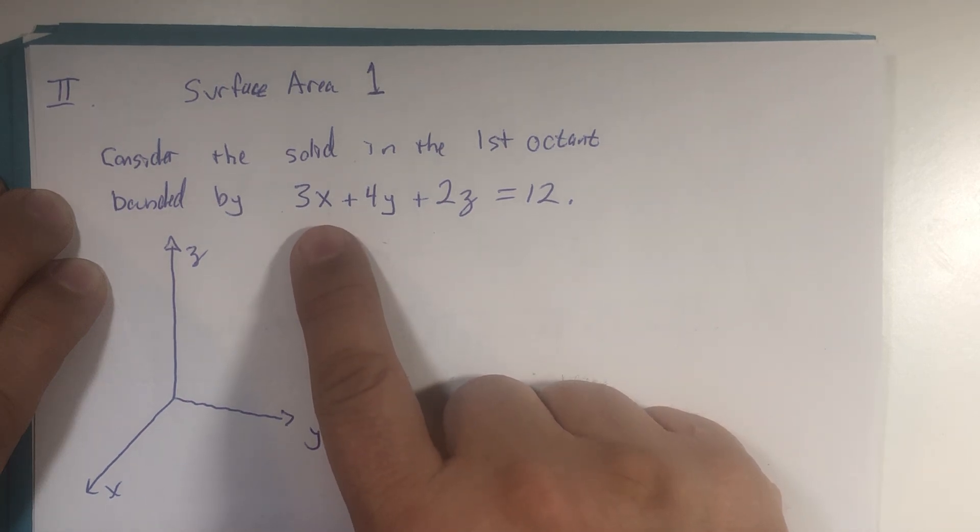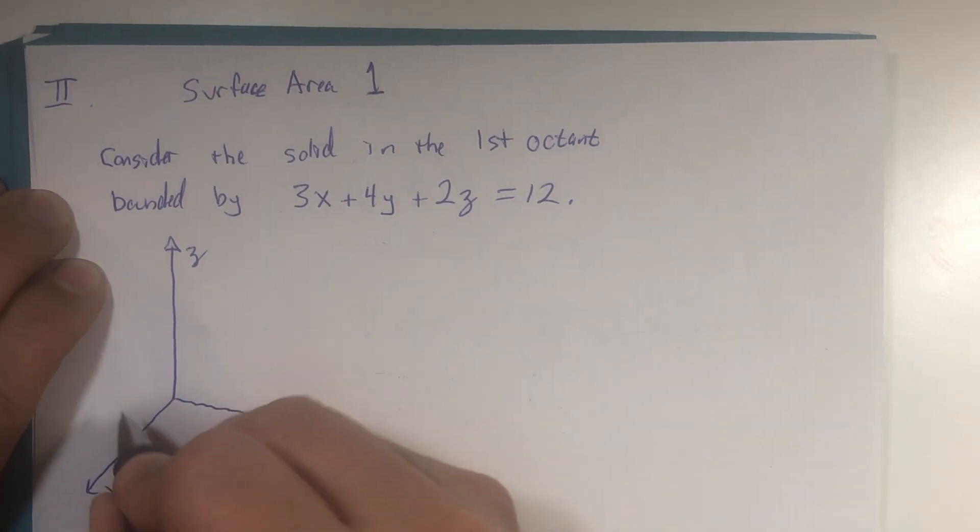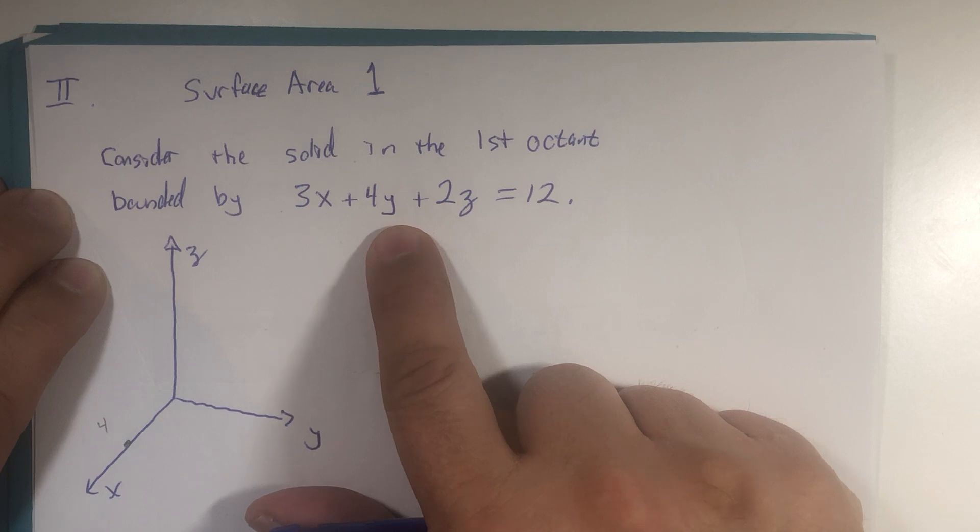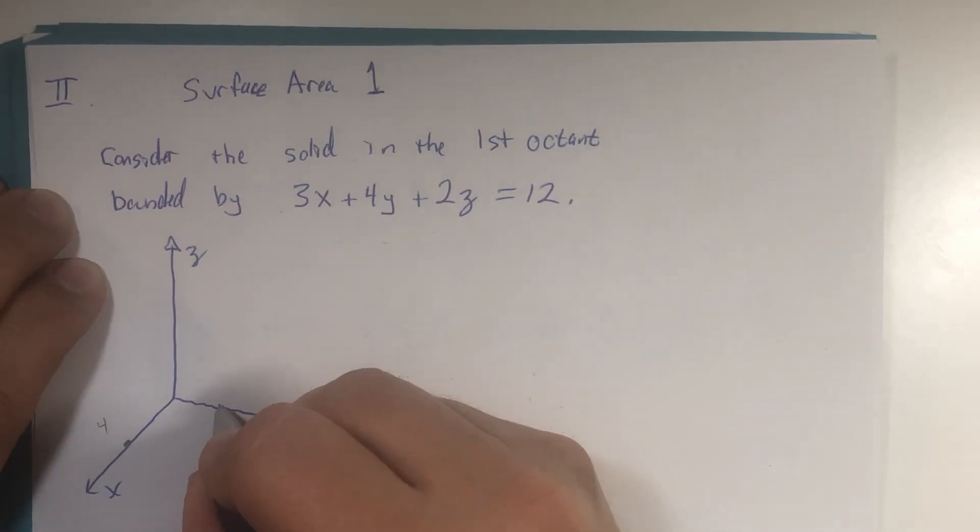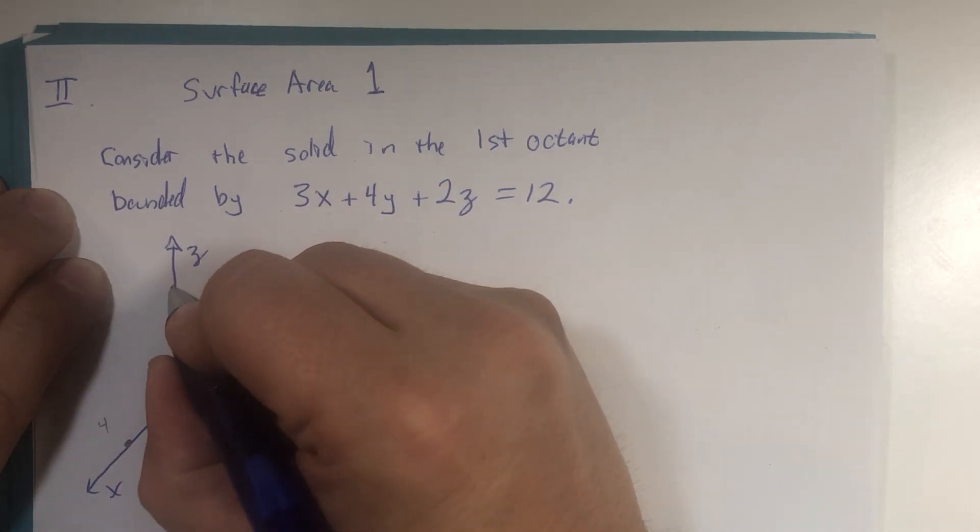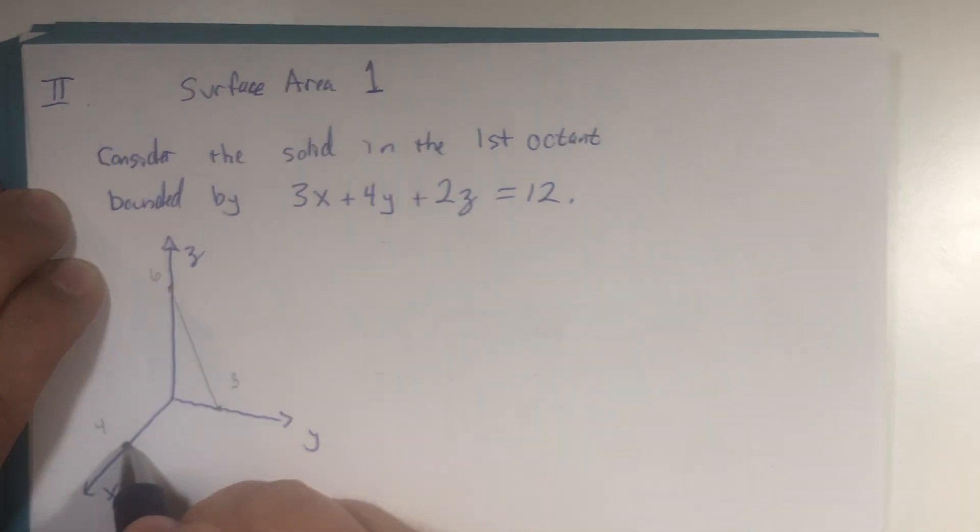If x is 4 and y and z are both 0, we find out that the x-intercept is at 4 comma 0 comma 0. If y is 3 and x and z are both 0, we do the same and we find the y-intercept, which is 0 comma 3 comma 0. And finally, if z is 6, we get the z-intercept 0 comma 0 comma 6.